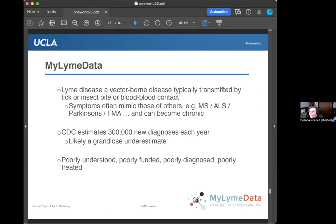The first application I've been working a lot with is Lyme disease. This is a project called MyLymeData, hosted by Lymedisease.org, which is a nonprofit. Just a little background on Lyme disease: it's a vector-borne disease, typically transmitted by tick or insect bite or blood-to-blood contact. The symptoms of Lyme often mimic those of others, like multiple sclerosis, ALS, Parkinson's, fibromyalgia, and especially if not treated right away, it can become chronic.